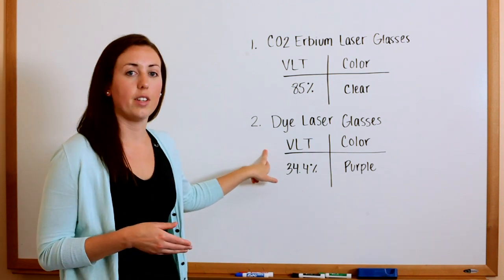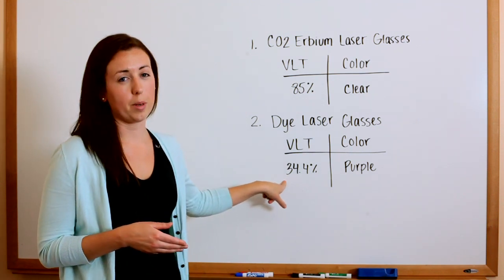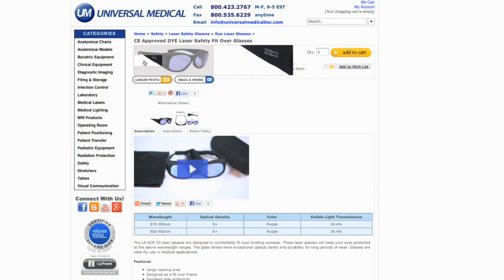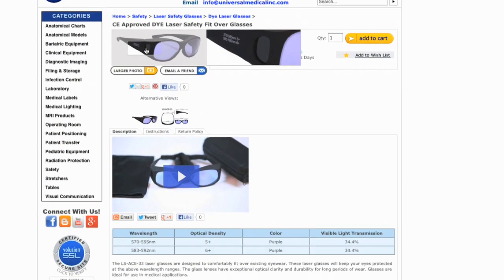For our dye laser safety glasses, we have a VLT of 34.4%, which means the lens color will actually be purple, so it's going to be a little darker.